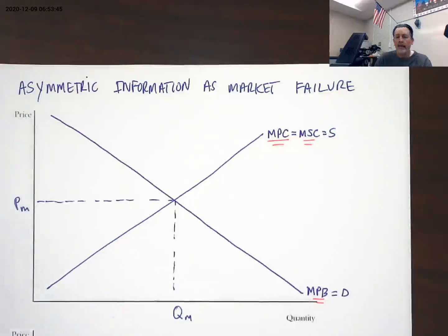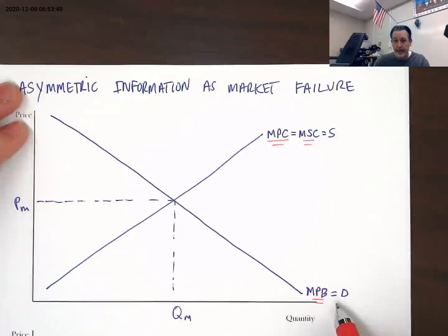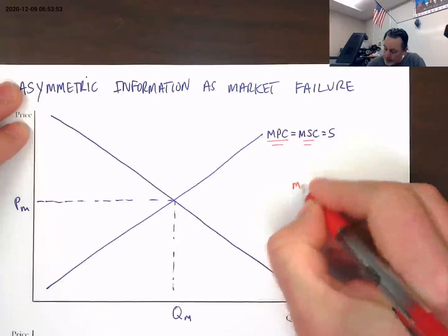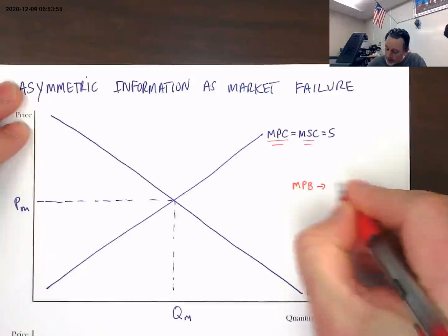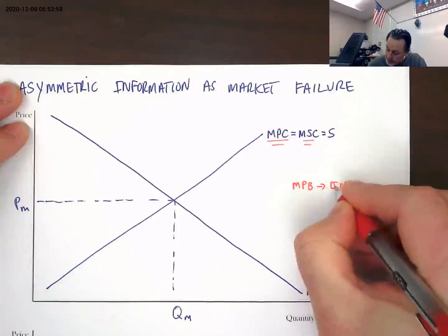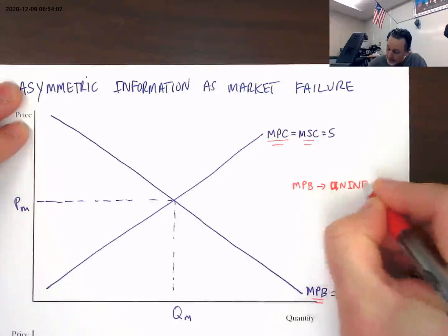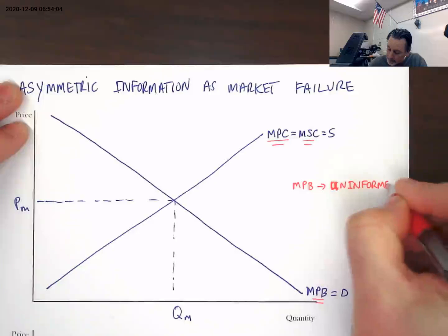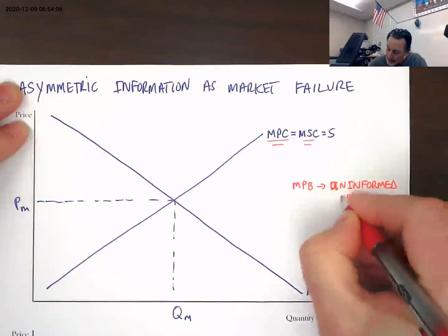The outcome of this is that the marginal private benefit curve under an asymmetric information problem becomes uninformed demand.